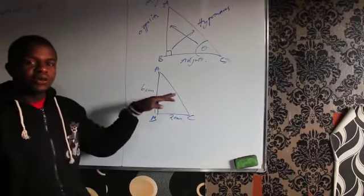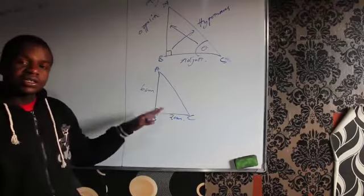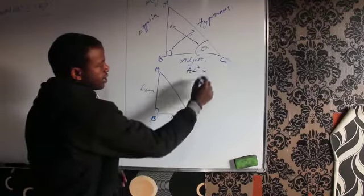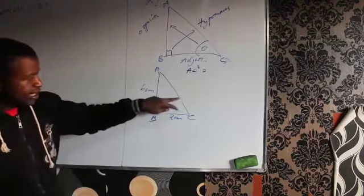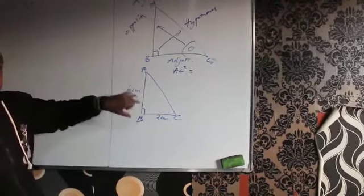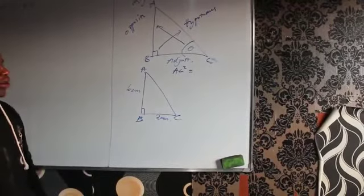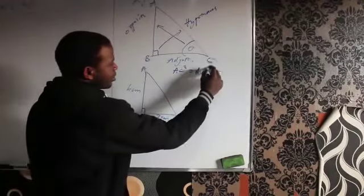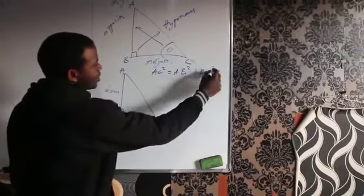So to calculate length AC we are going to use Pythagoras theorem. If you are calculating the hypotenuse, you are going to add these two sides. So we are going to add AB squared plus BC squared.